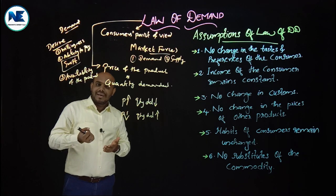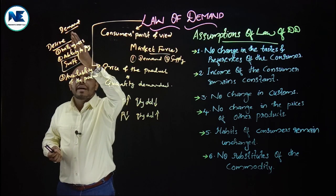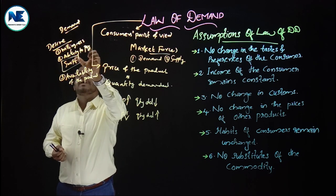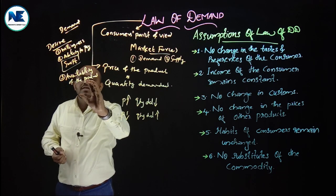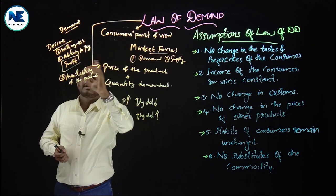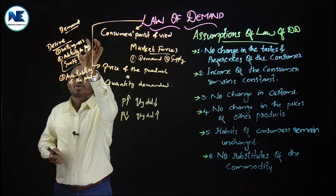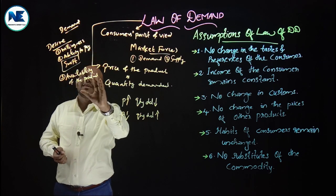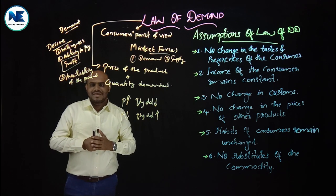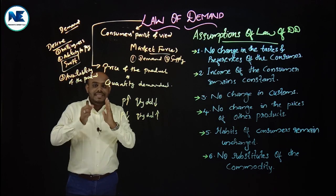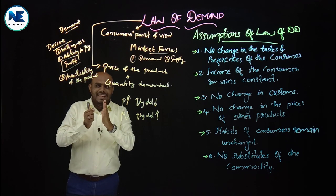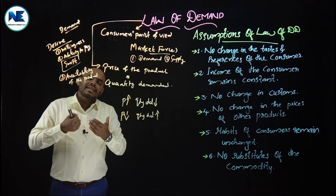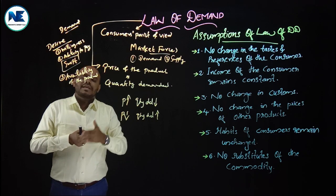So, desire will become demand when three conditions are fulfilled. First, there should be willingness to purchase. Second, there should be ability to pay. Third, there should be availability of the product.